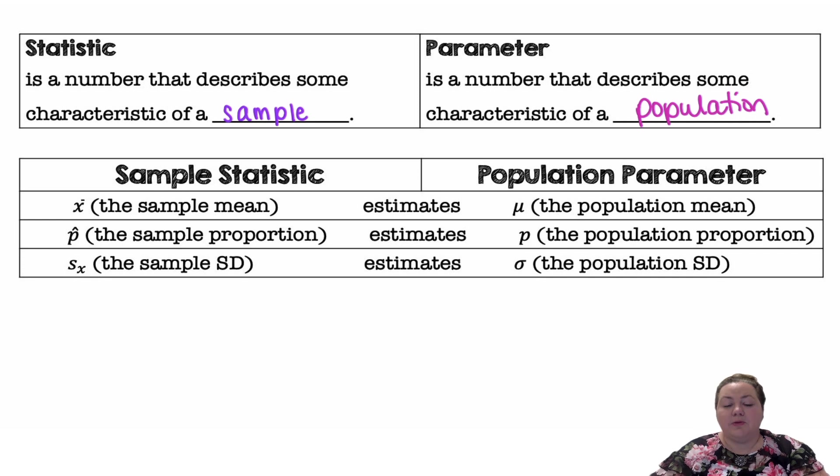A statistic is a number that describes some characteristic of a sample. We have x̄ which is the sample mean, p̂ is the sample proportion, and Sx is the sample standard deviation.